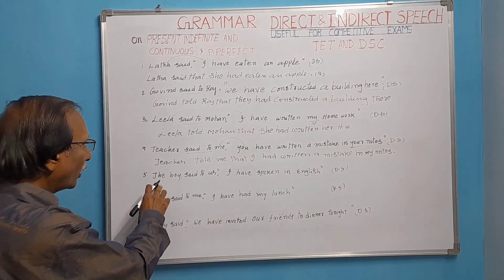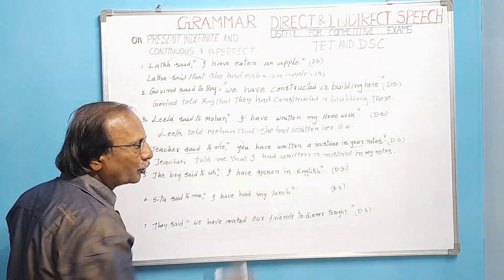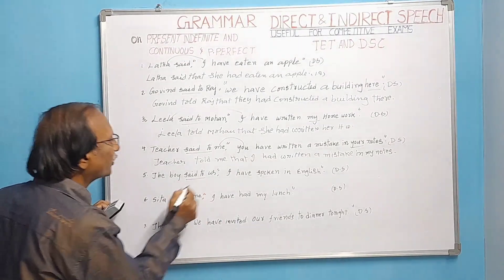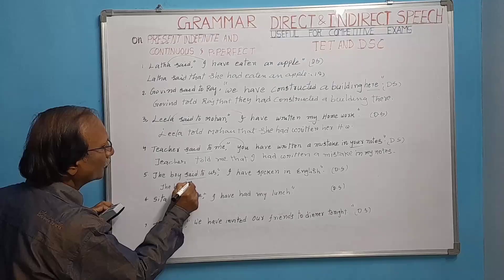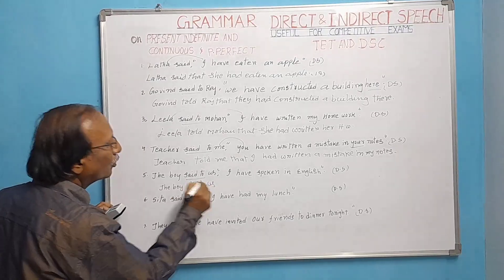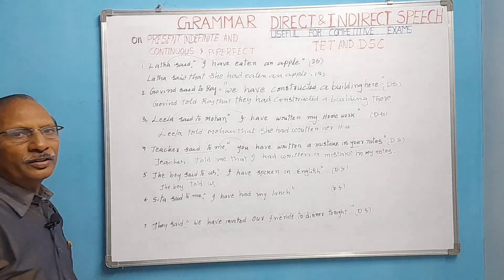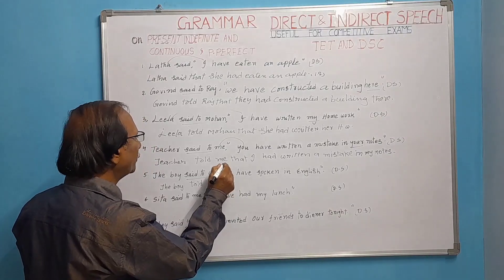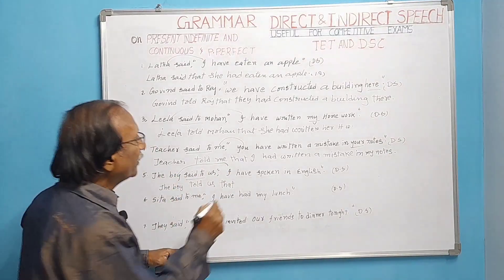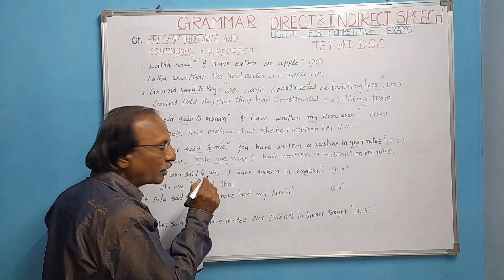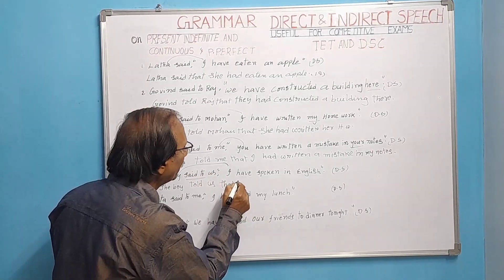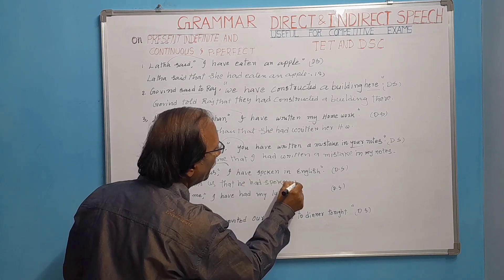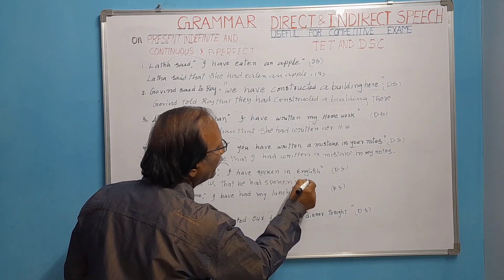The boy said to us, 'I have spoken in English.' 'Said to' becomes 'told': The boy told us. We add 'that.' 'I' refers to the boy, so the subject becomes third person 'he.' 'Have spoken' changes to 'had spoken.' Result: The boy told us that he had spoken in English.